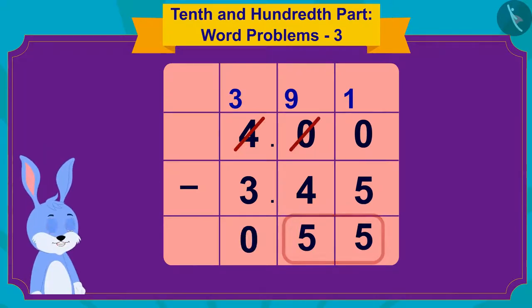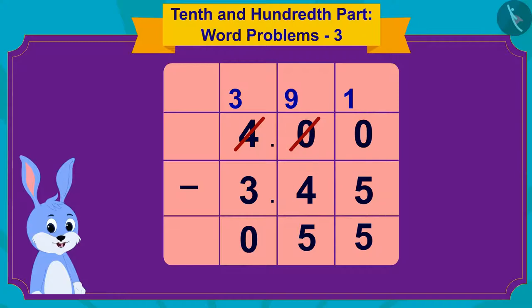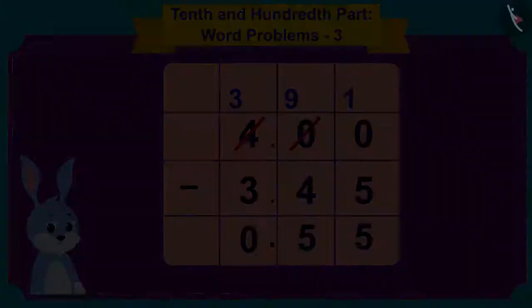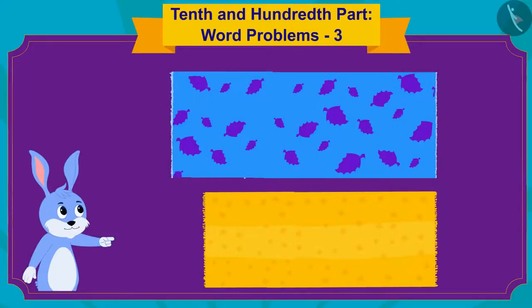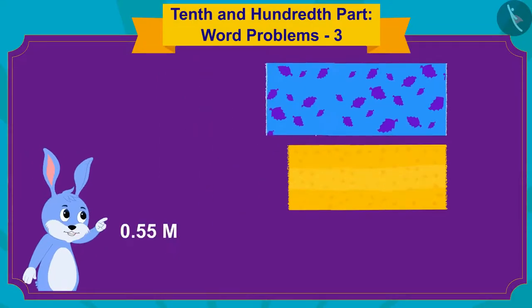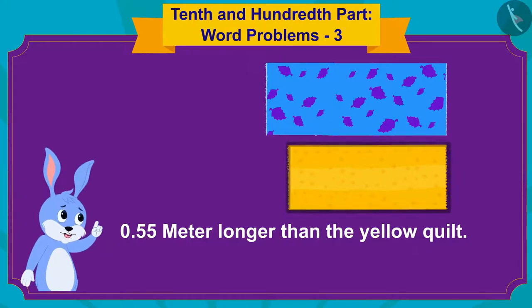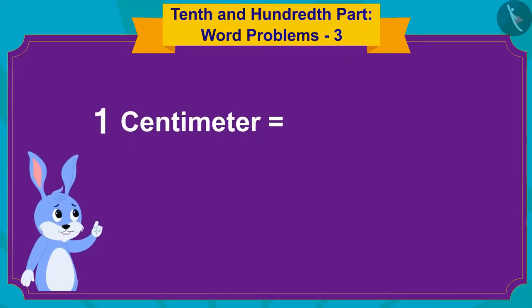That makes it fifty five. Now, because there are two digits after the decimal point, I will write the decimal point in the answer in such a way so that there are two digits after the decimal point, thought Bunny. The blue quilt is zero point five five meters longer than the yellow quilt.